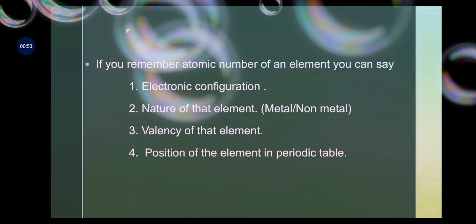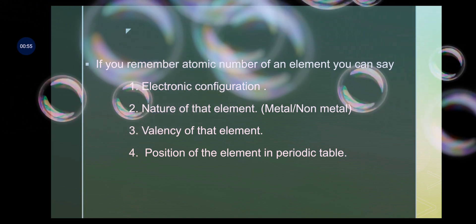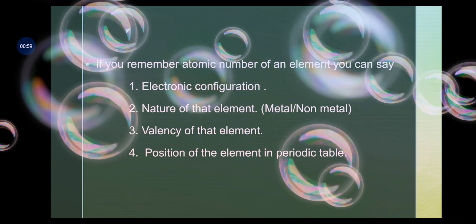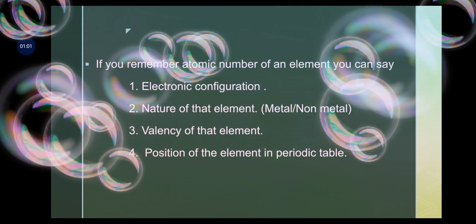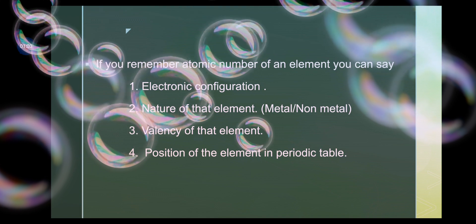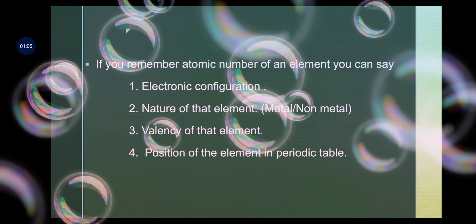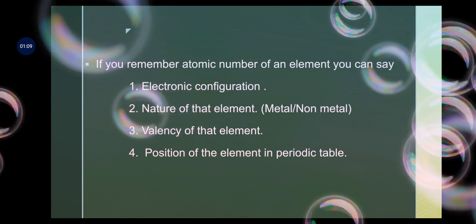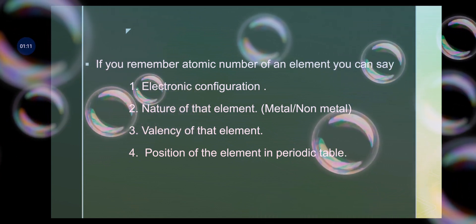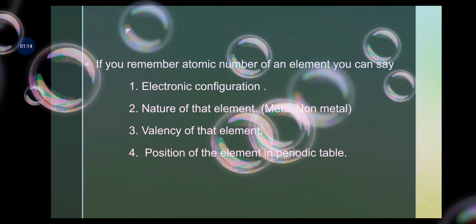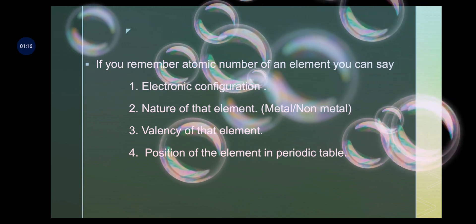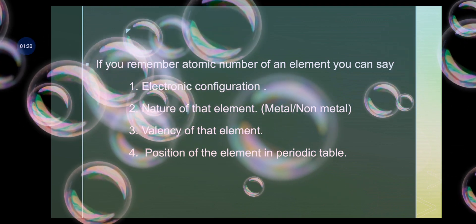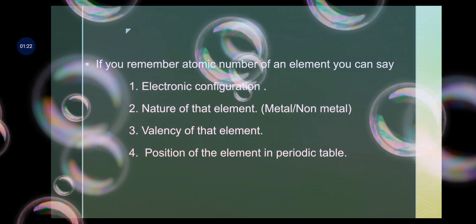If we remember the atomic number of an element, what can we learn from it? First, we can assign the electronic configuration of any element. Second, we can say whether the element is a metal, non-metal, metalloid, or noble gas. Third, we can determine the valency of the element. Fourth, we can predict the exact position of that element in the periodic table.